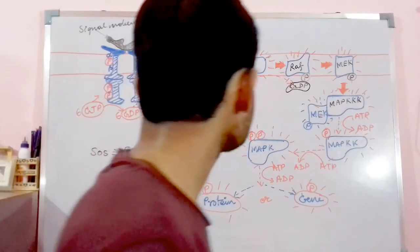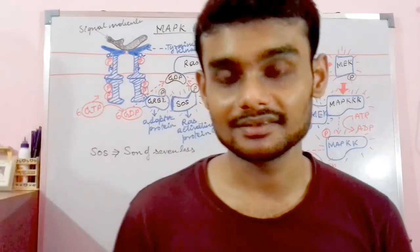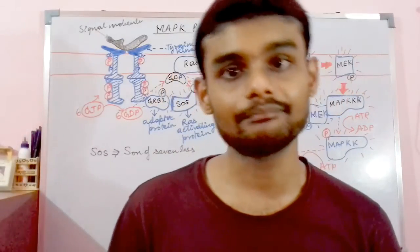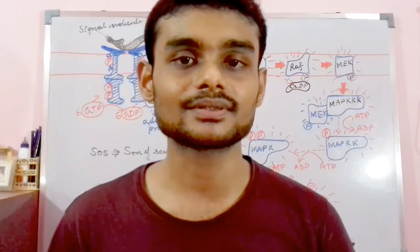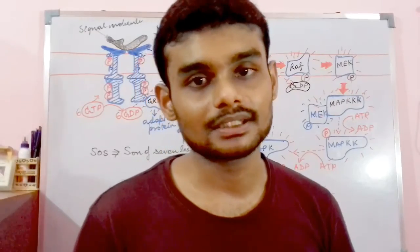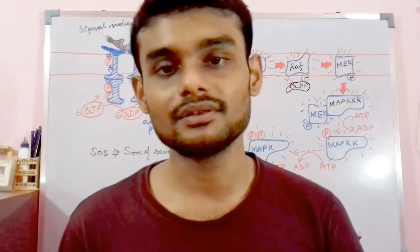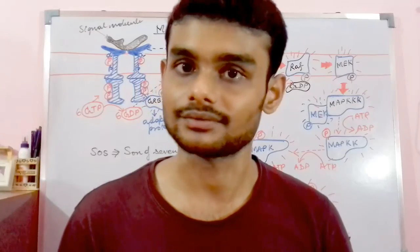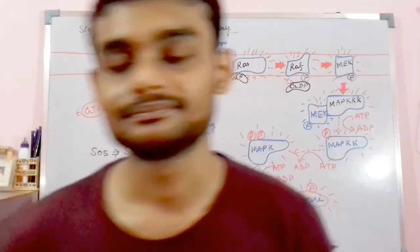So this is how the entire MAP kinase or mitogen-activated protein kinase pathway happens in the cellular communication of cell signaling — unlike the cAMP and the IP3-DAG pathways, this is a little bit more complex and larger. Hope you liked this video. Please subscribe to the channel, share this video as much as possible, hit the thumbs up button, and comment below if you have any queries or doubts. Thank you.